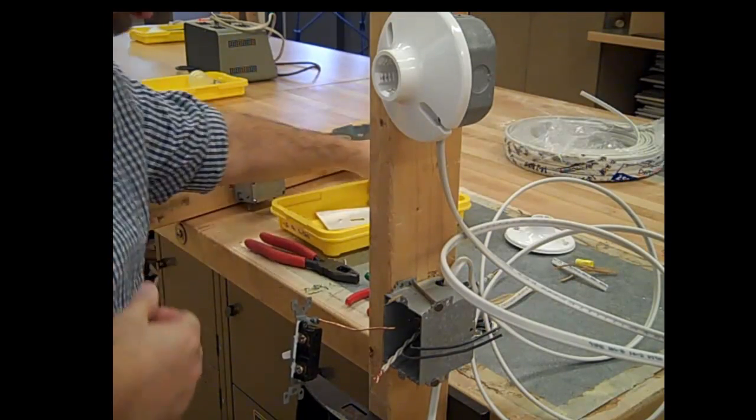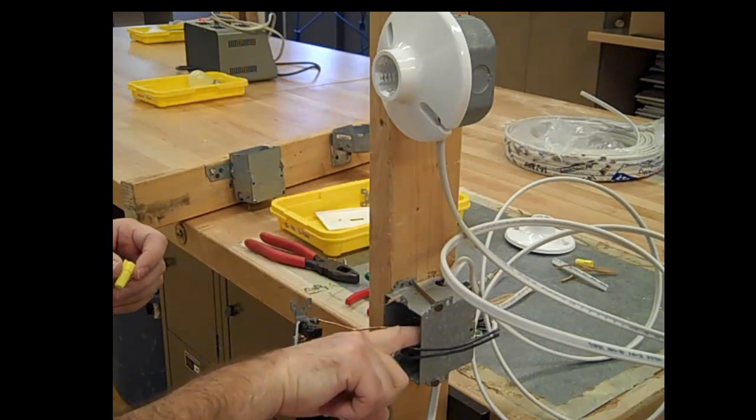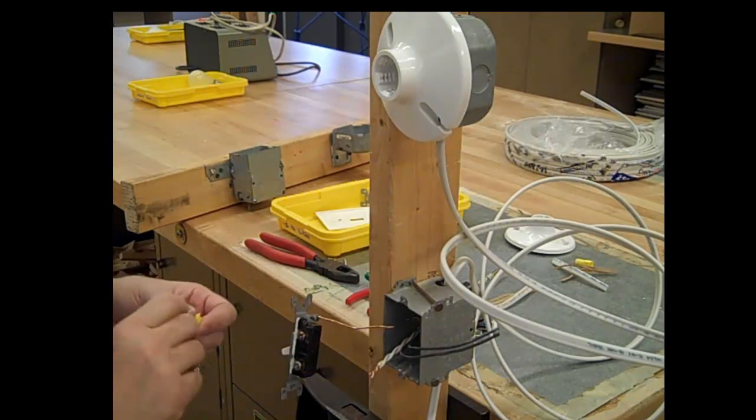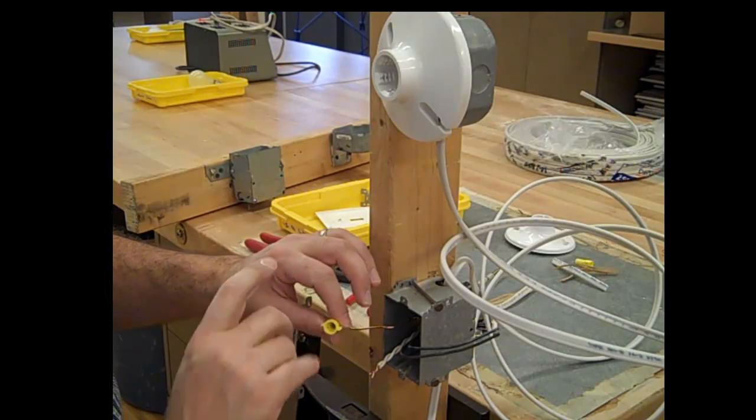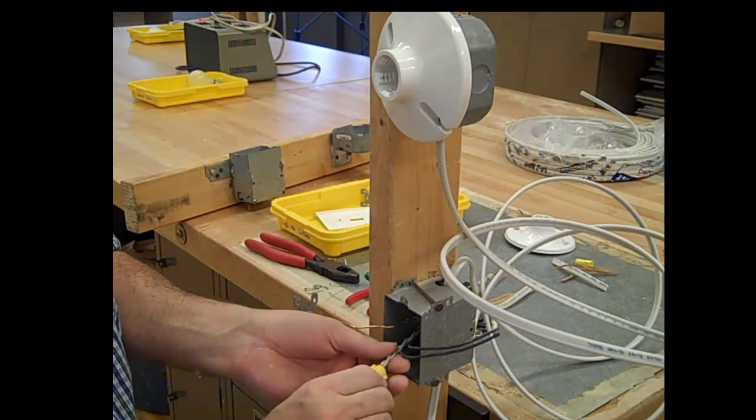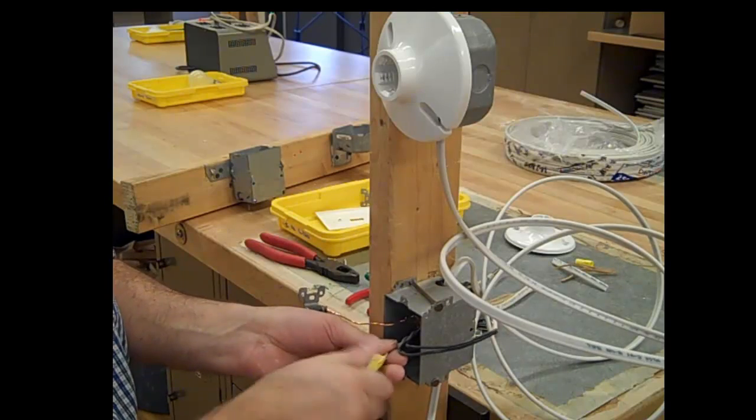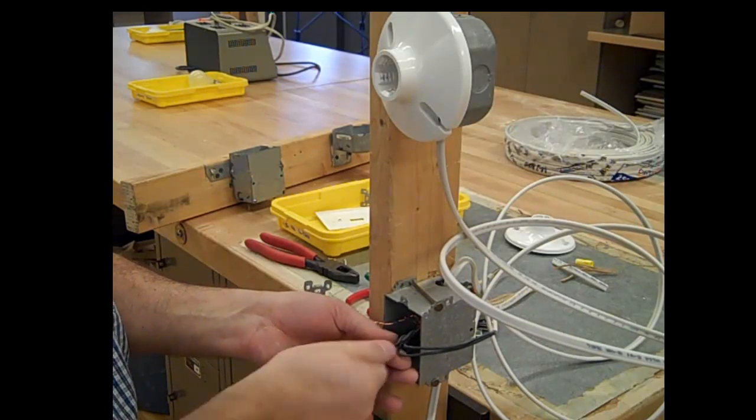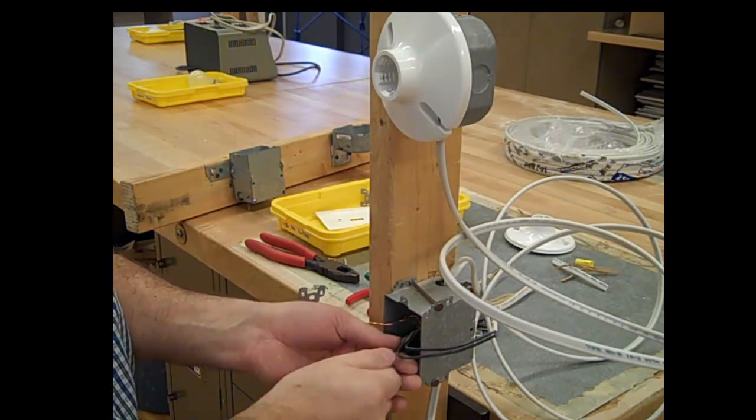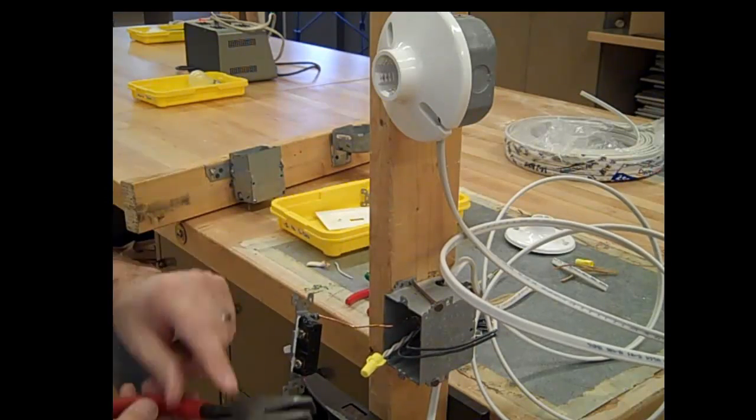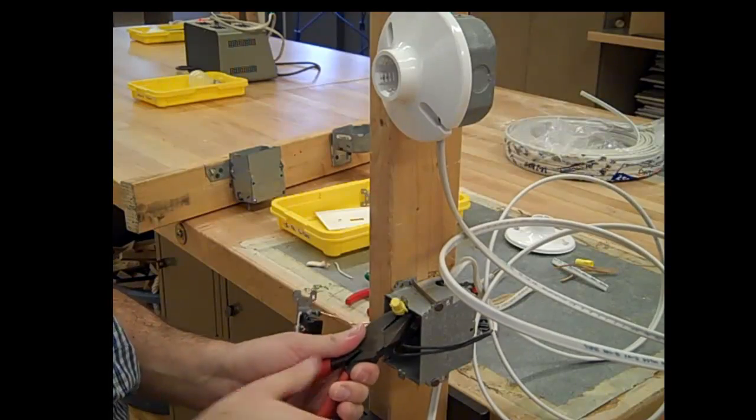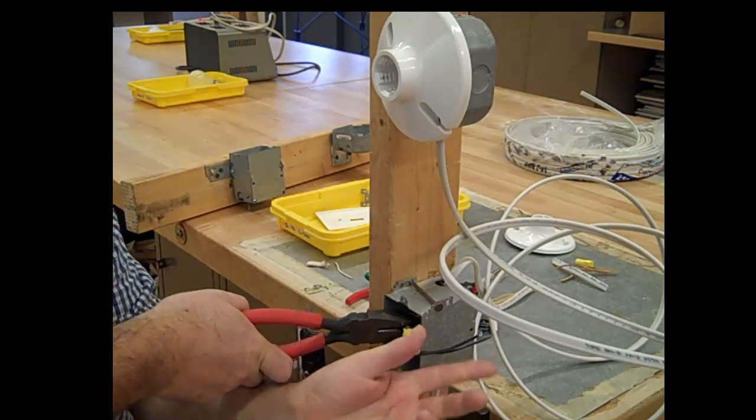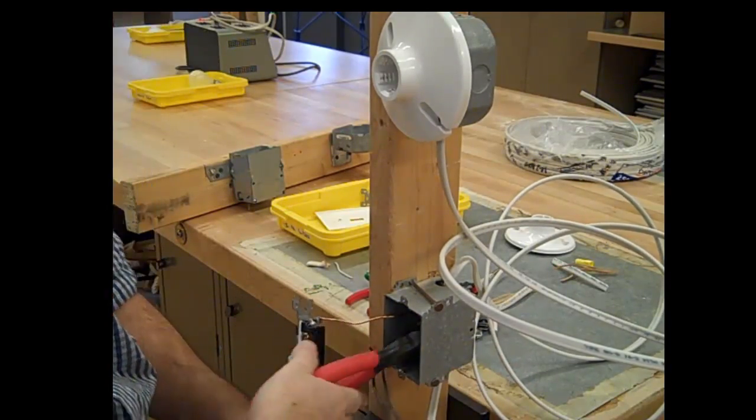You use a wire nut. There is a metal spring on the inside of here that wraps around these and makes a very good connection. Twist this on until you can't twist it anymore. Take your pliers, grab onto the wire, twist and push it all the way to the back of the box.